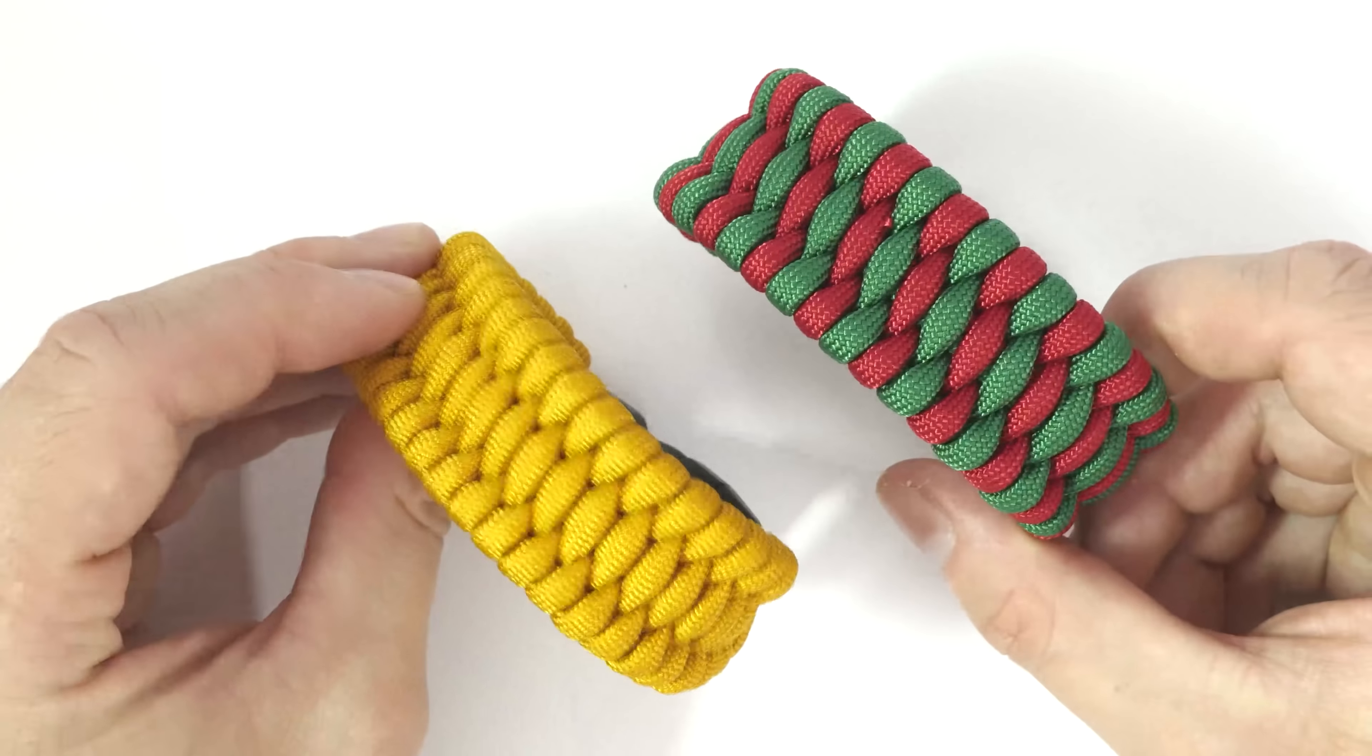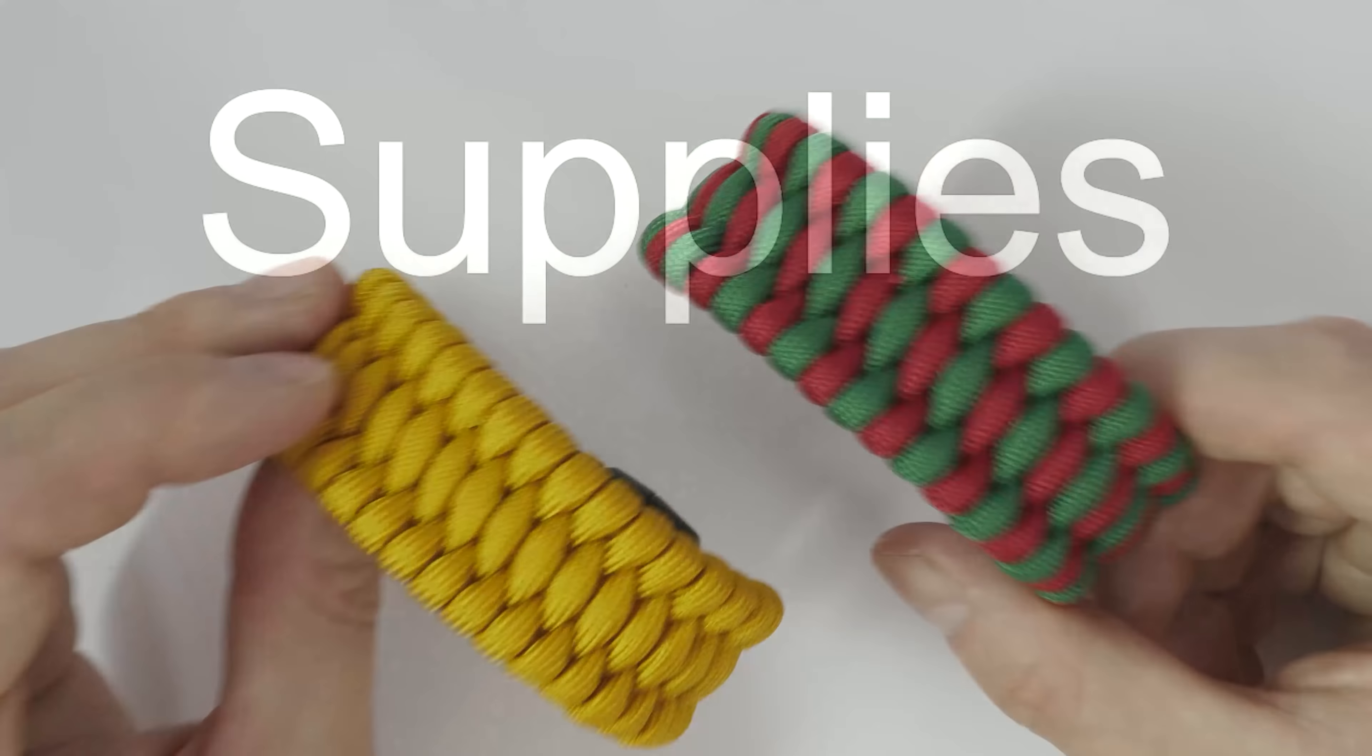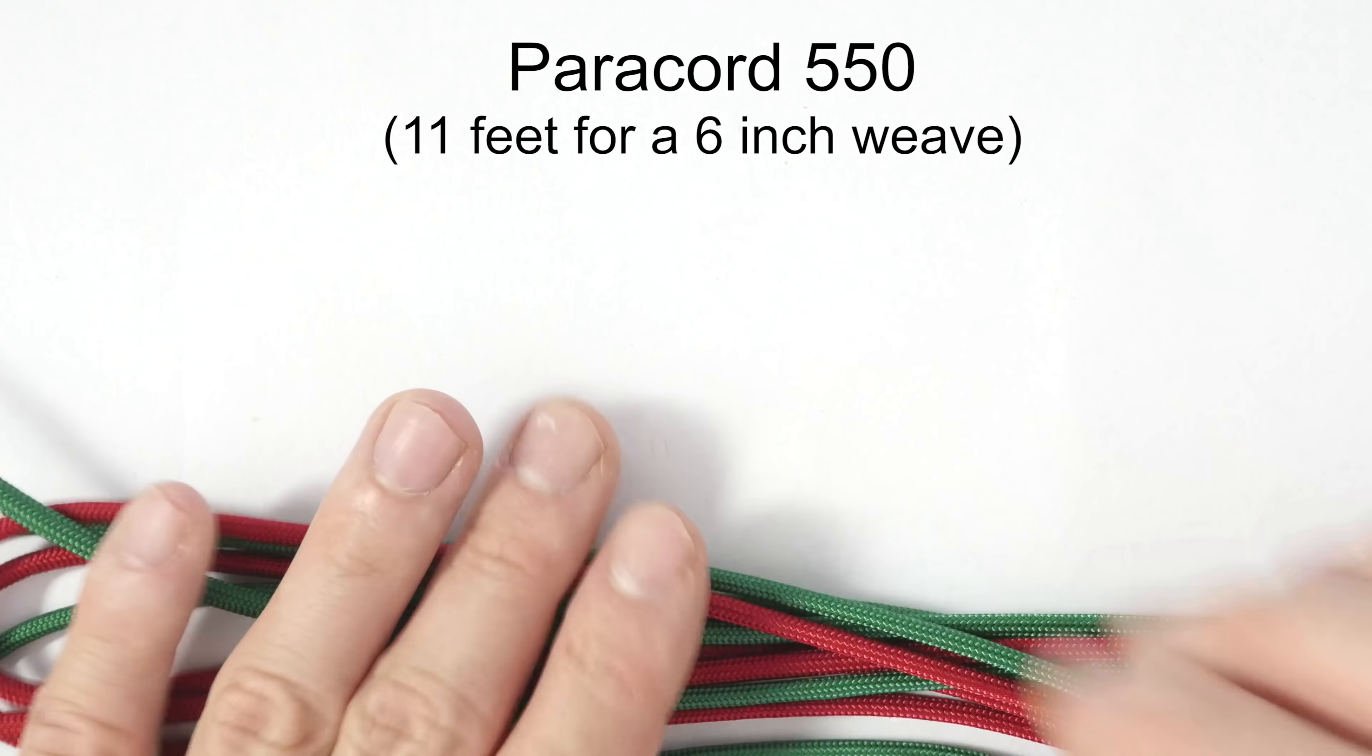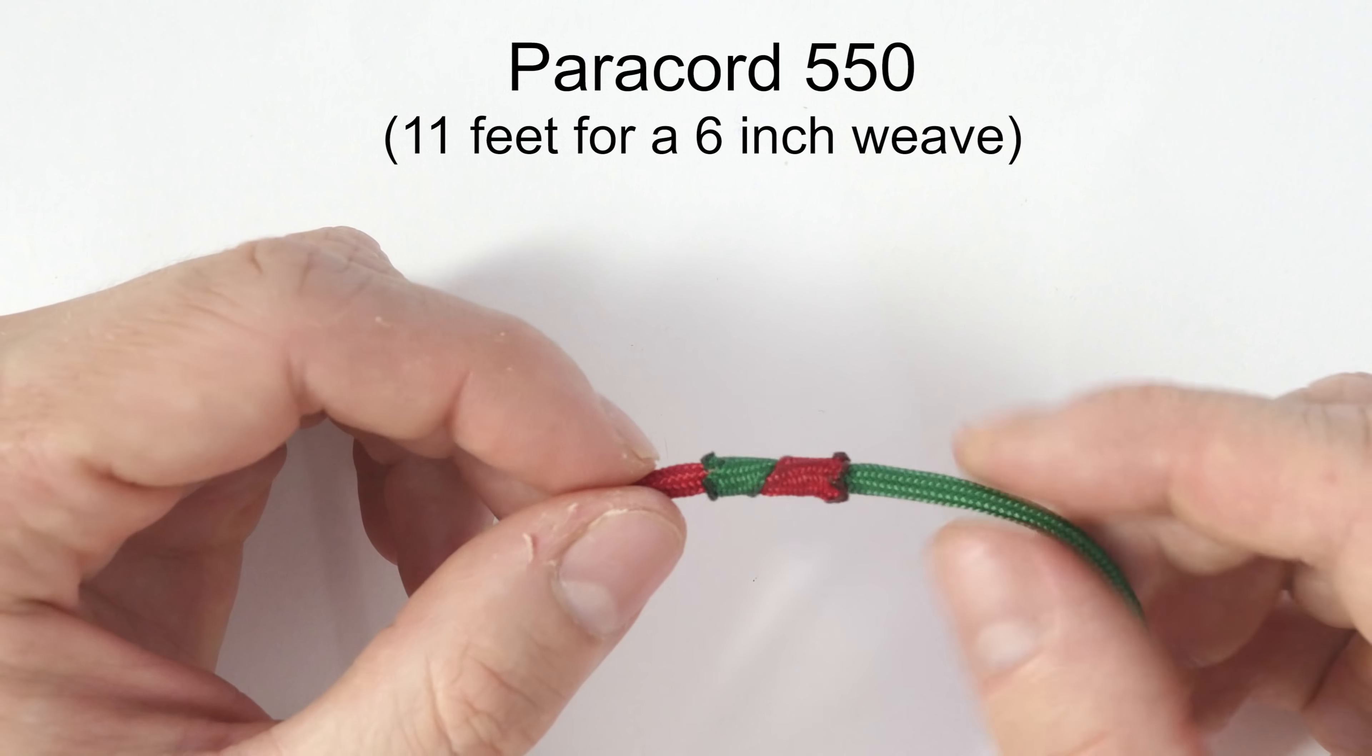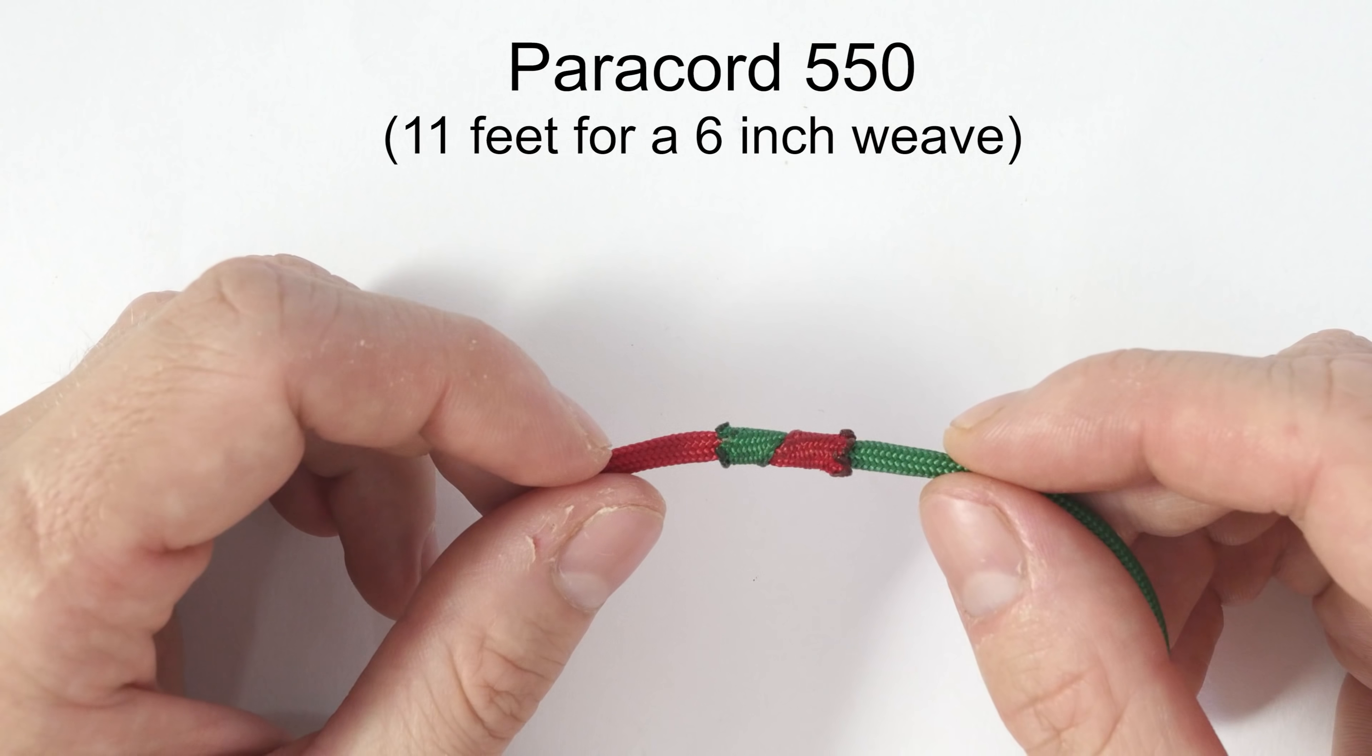Both of these bracelets are done exactly the same way, we're just using one cord in the single tone version and two colors of cord in the two tone version. If we take a moment to look at the supplies, the first and most important supply is going to be paracord. A single tone version of the bracelet is going to require one long piece of paracord. A two tone version is going to require two shorter pieces of paracord, which we join together. Usually, I like to use the manny method in order to join two pieces of paracord together. Alternatively, you can just melt the two ends together.